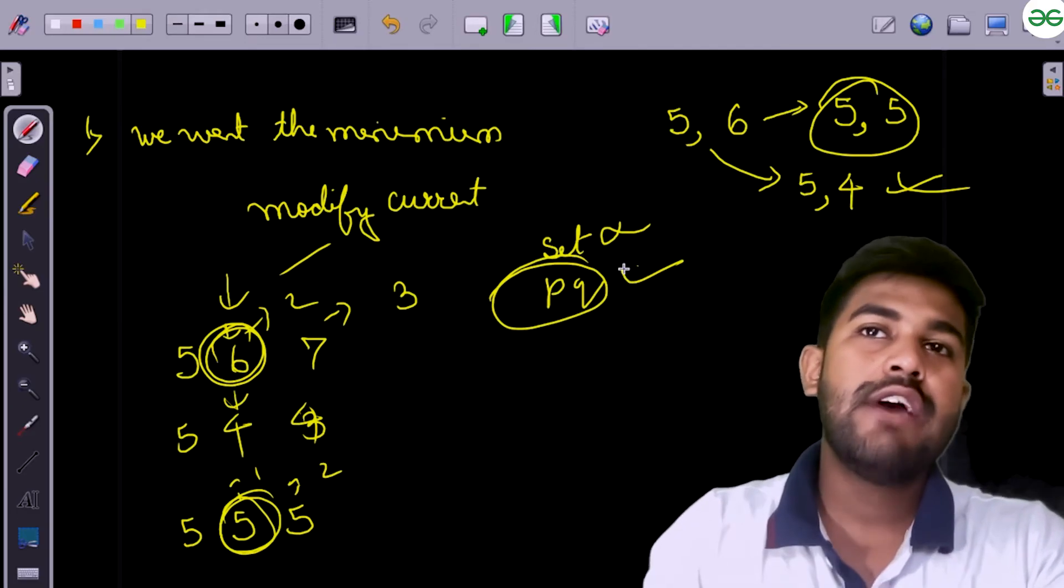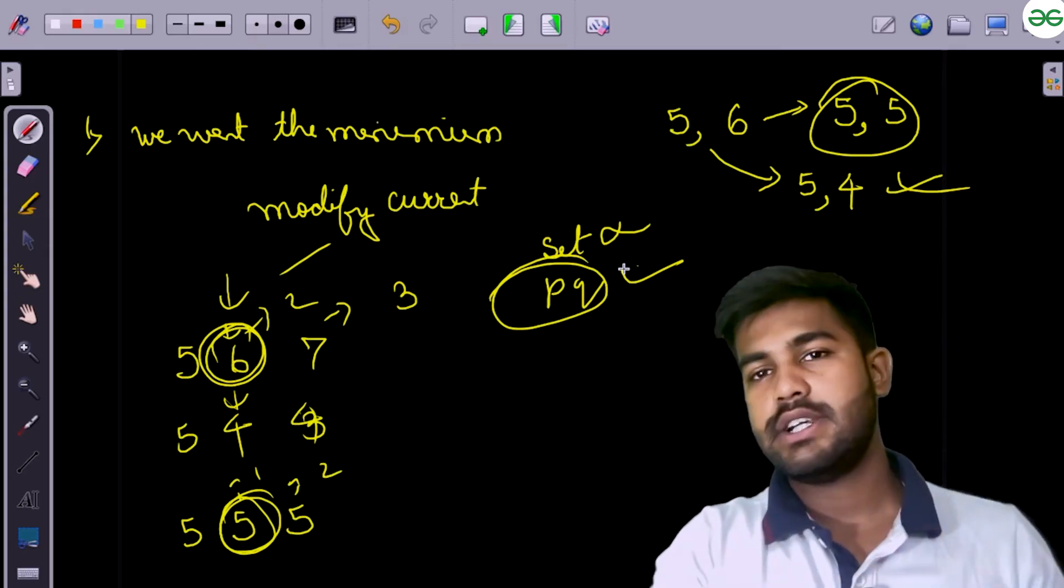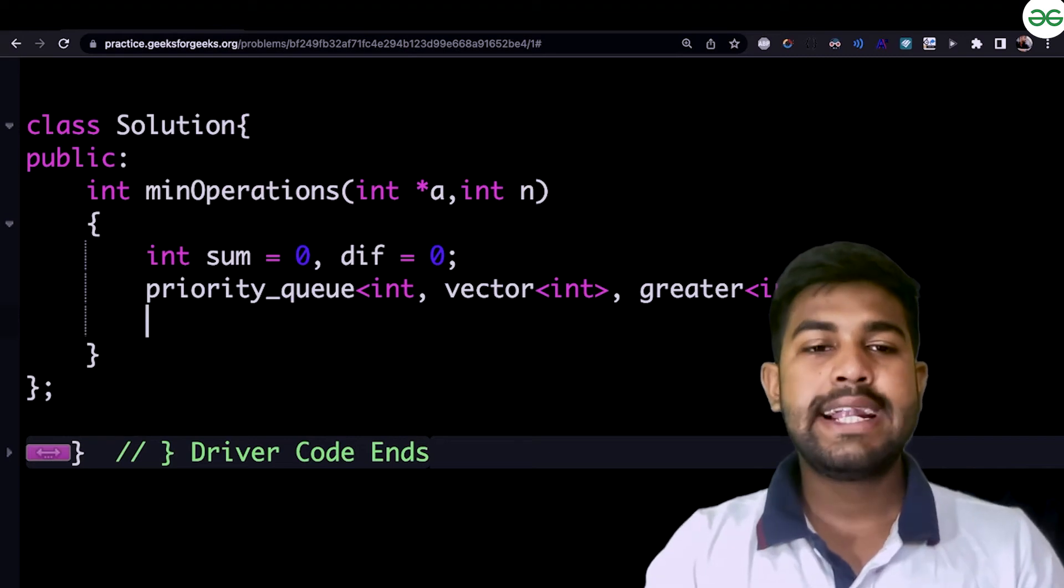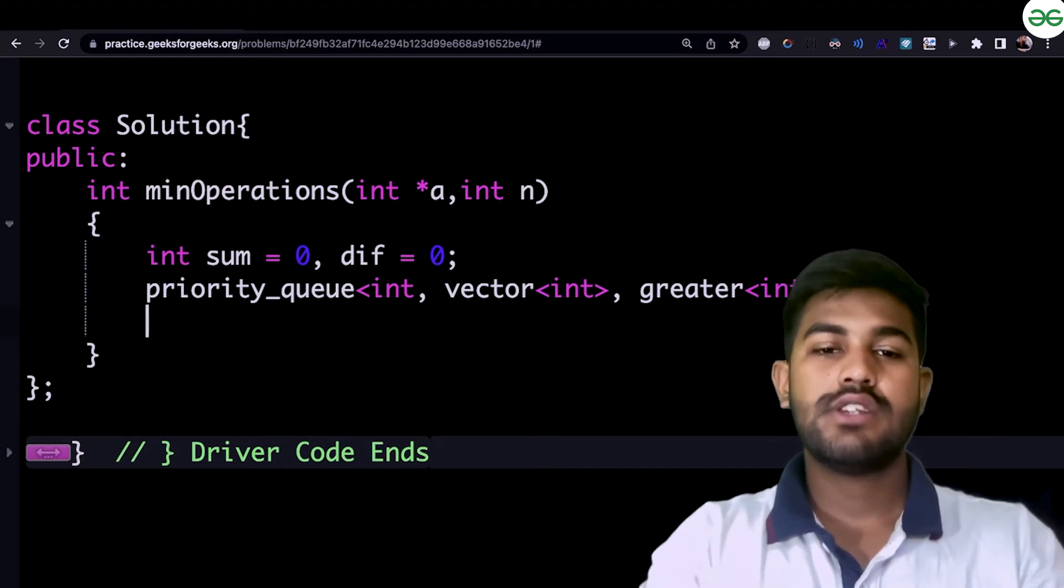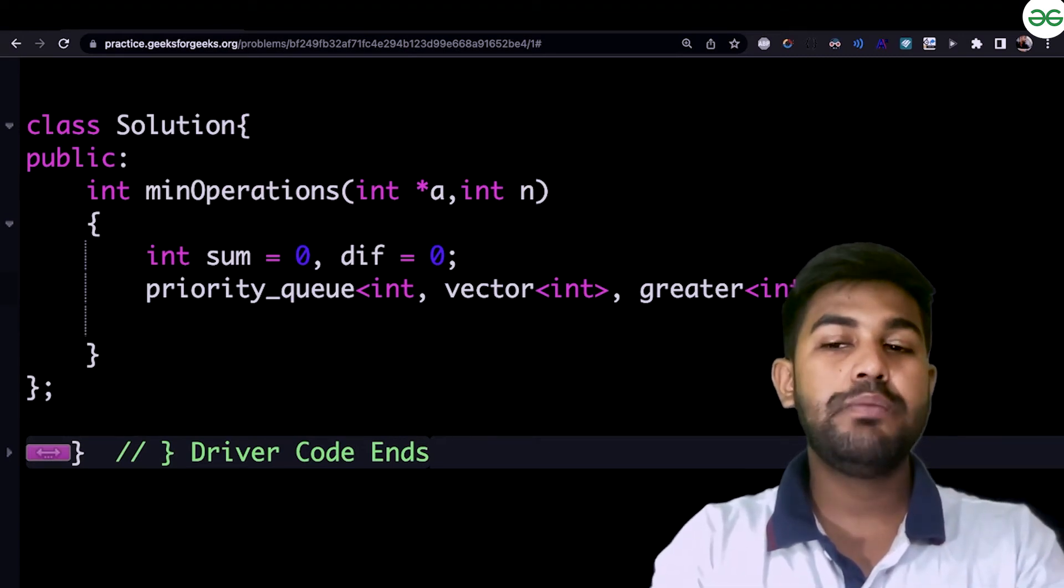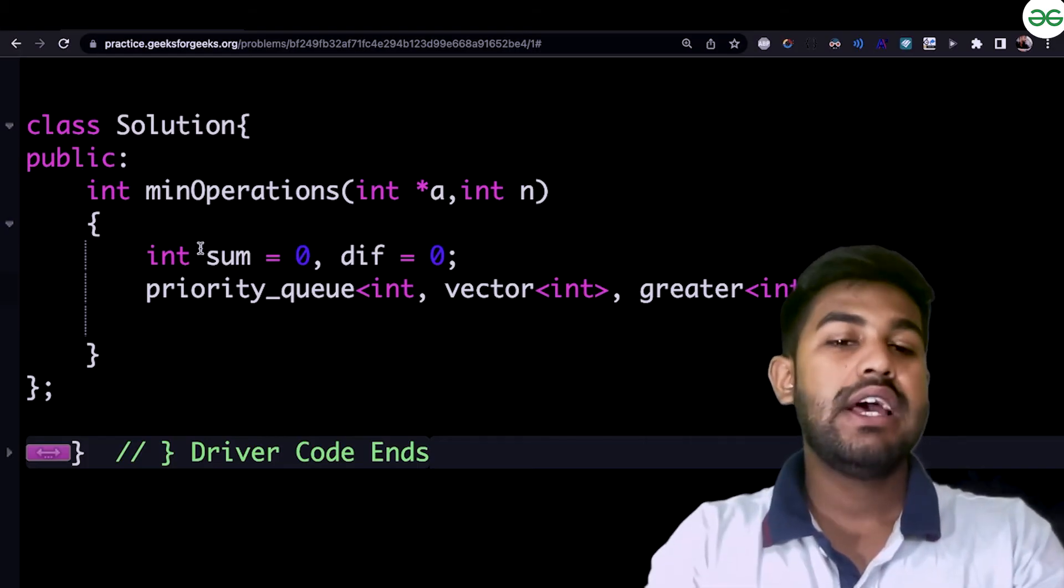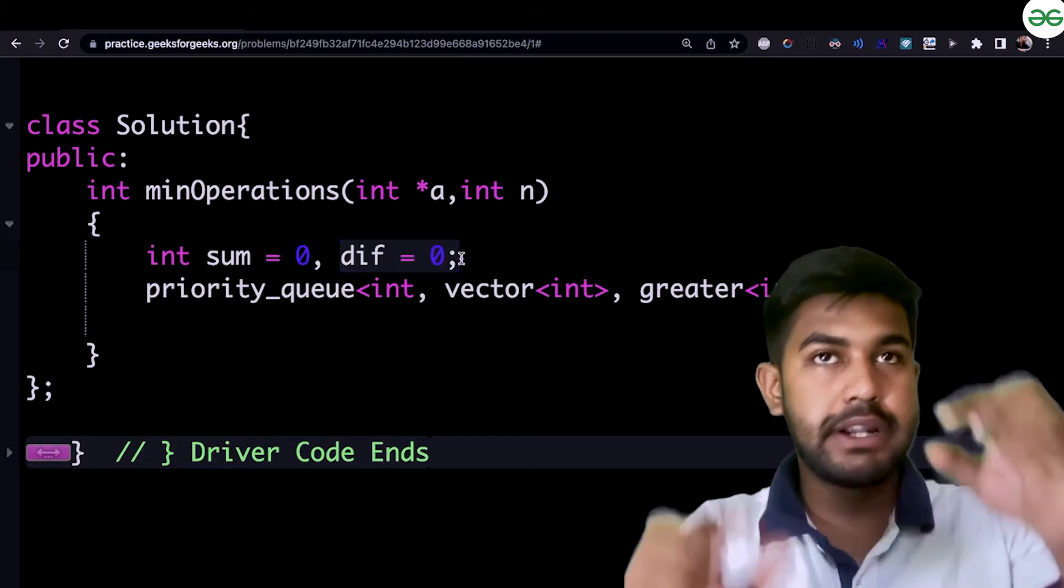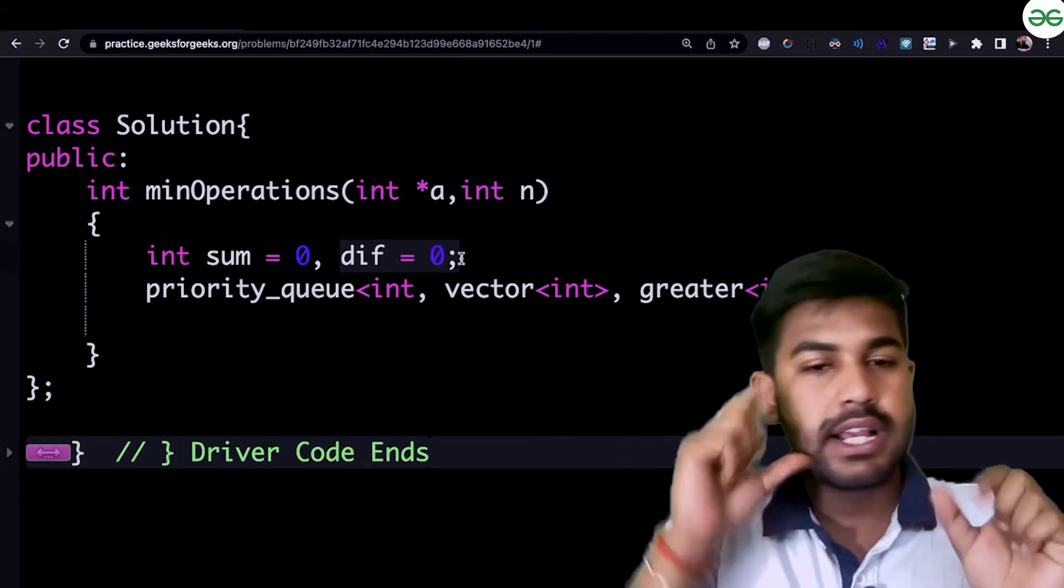But set won't work because it would store the unique element. So we would take help of the priority queue itself because we need to pop the minimum element also. Because after the minimum element work is done, we would pop that and we want to insert it. So now what we would do is, now let us begin the implementation. So this is a mini priority queue because we want the minimum at each step. This is to store the number of operations. This is to store the difference between the minimum occurred till this point and the current element.